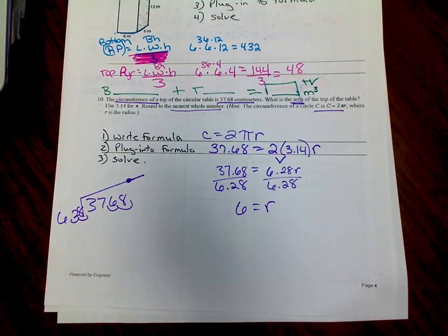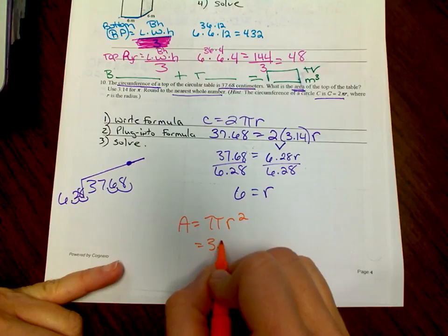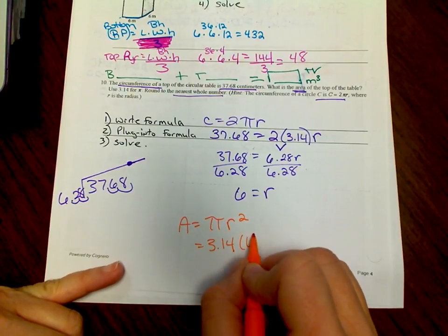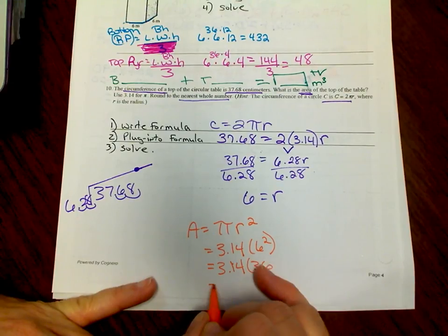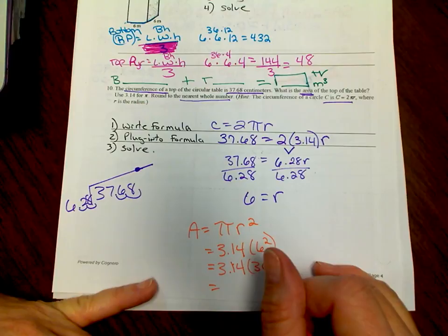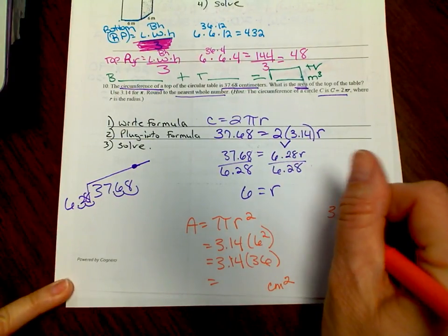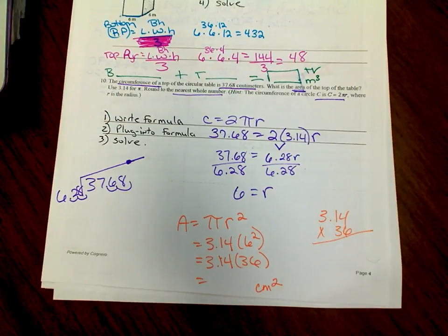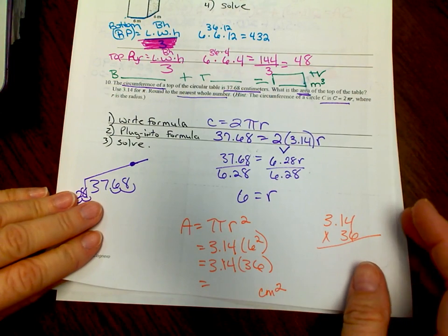Now find the area using area equals pi r squared. That's 3.14 times 6 squared, which is 3.14 times 36. Do the multiplication — you'll get a result ending in .04, so you won't need to round. Use the whole number. Your answer will be in centimeters squared.